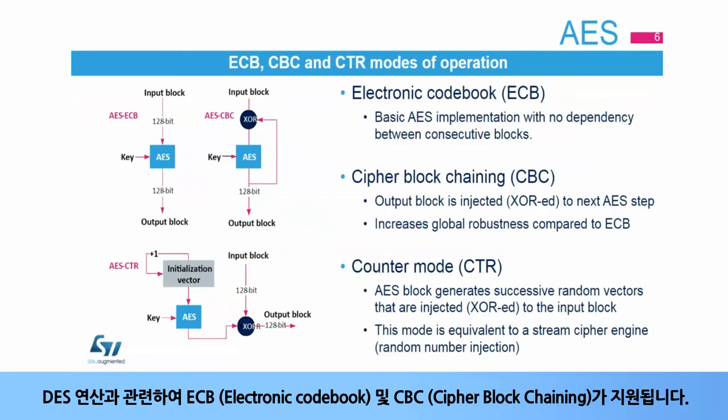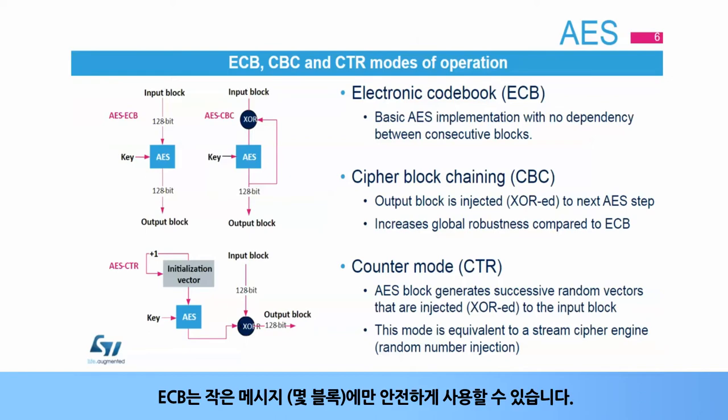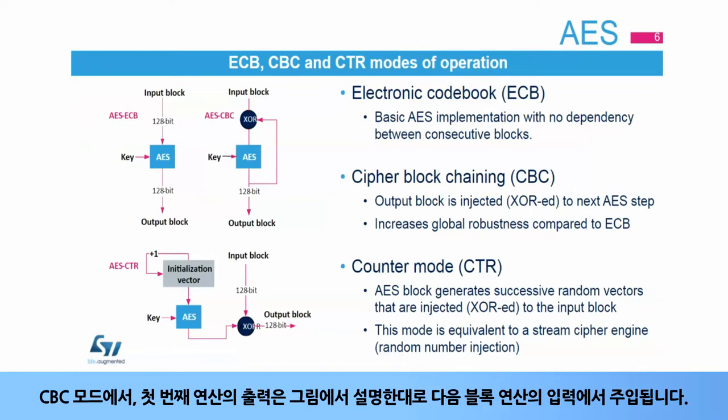As for DES operations, Electronic Codebook, or ECB, and Cipher Block Chaining, or CBC, are supported. ECB can be used safely for small messages only, a few blocks. In CBC mode, the output of the first operation is injected at the input of the next block operation, as described in the diagram.